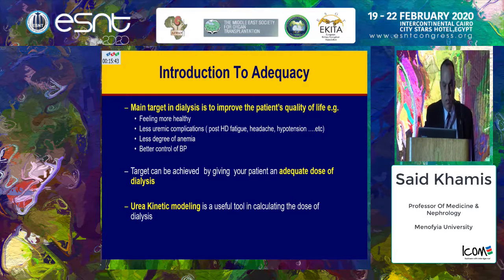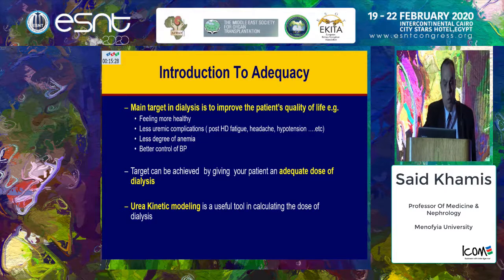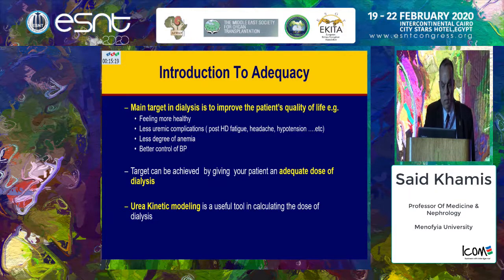The main target in dialysis is to improve the patient's quality of life — keeping the patient feeling more healthy, with less uremic complications like post-dialysis fatigue, headache, and hypotension, less anemia, and better blood pressure control. This target can be achieved by giving the patient an adequate dose of dialysis, and urea KT/V — we cannot deny — remains a useful tool in calculating the dose of dialysis.